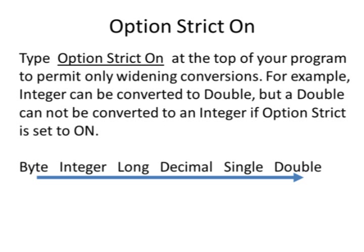Visual Basic has an option called strict. If you type option strict on at the top of your program, then Visual Basic will only permit widening conversions. For example, an integer can be converted to a double, but a double cannot be converted to an integer if option strict is set to on.